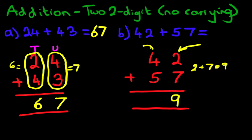Now we're going to add the tens column, which is 4 plus 5. So what is 4 plus 5? 4 plus 5 is? That's right, it's 9. So we put down 9 over here.